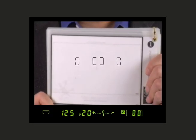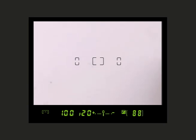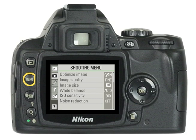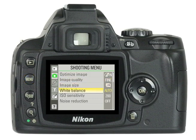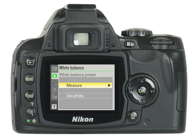Frame, focus, and set exposure for the card or object so that it fills the viewfinder, then take the picture. Here's how to measure a value for preset or custom white balance: place a neutral gray or white object under the lighting that will be used in the final photograph, display the shooting menu, select white balance preset, and press OK.